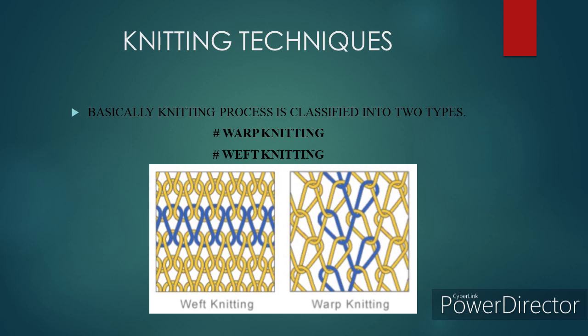Knitting techniques: A knitted fabric is manufactured by inter-looping of yarns. The knitting process is classified into two types: warp knitting and weft knitting. Warp knitting represents the fastest method of producing fabric from yarns. It differs from weft knitting in that each needle loops its own thread. The needles produce parallel rows of loops simultaneously that are interlocked in a zigzag pattern, and the fabric is produced in sheet or flat form using one or more sets of warp yarns.